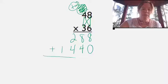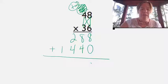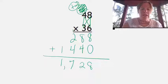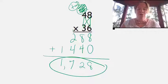Got my two partial products, then all I have to do is add. Eight plus zero is eight, eight plus four is twelve, carry my one. Four plus two is six, plus one more is seven, and one. So my final product is one thousand seven hundred twenty-eight.